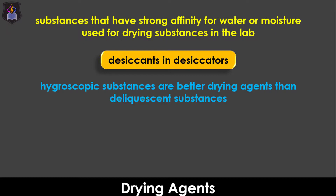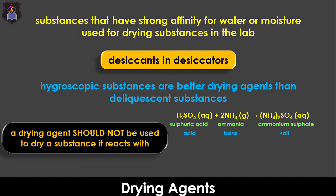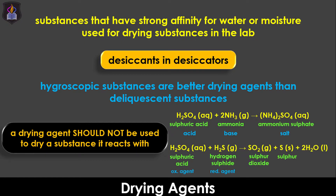It is important to note that a drying agent cannot be used to dry a substance it reacts with. This explains why we cannot use concentrated sulfuric acid to dry ammonia gas, because they will react together in a neutralization reaction to form a salt, ammonium sulfate. Similarly, the concentrated acid is not used to dry hydrogen sulfide gas because they will undergo a redox reaction to form sulfur dioxide, sulfur and water.